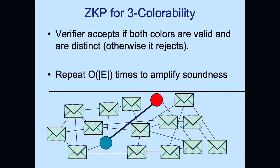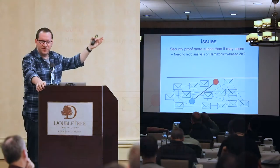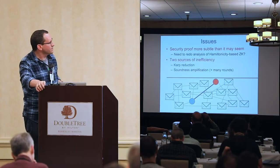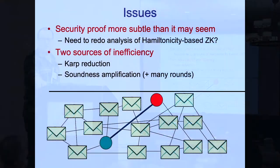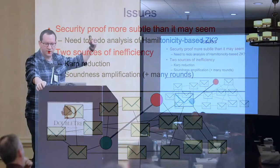The GMW zero-knowledge protocol is very elegant, but proving security formally takes pages in Goldreich's Foundations of Cryptography. Switching to a different NP-complete language like Hamiltonicity requires redoing the proof. The two main sources of inefficiency are: first, reducing your functionality to the three-coloring problem (non-trivial and expensive); second, amplifying soundness, which costs both communication and rounds, and parallel repetition doesn't work in the plain model.